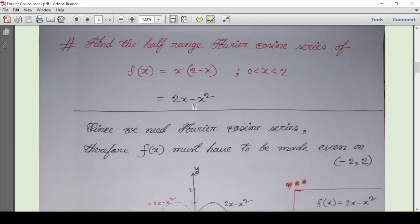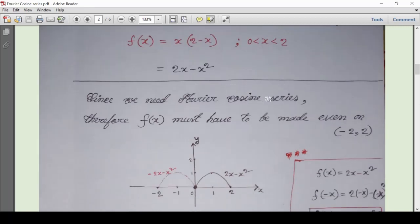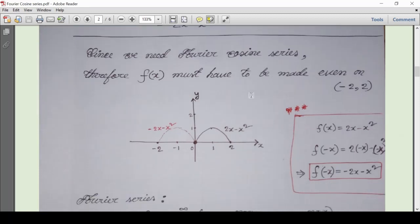It is known to you that if we want to find a Fourier cosine series only, then the function f(x) = 2x - x², which is defined in the interval 0 to 2, should be expanded on minus 2 to 0.